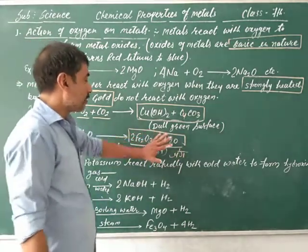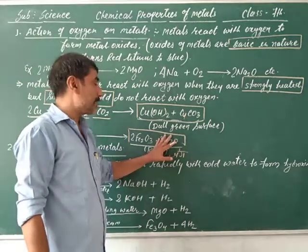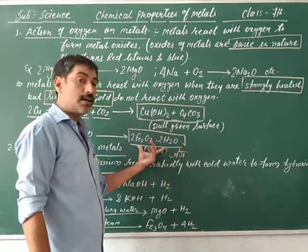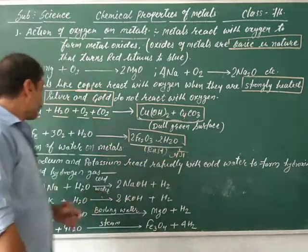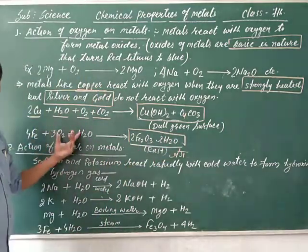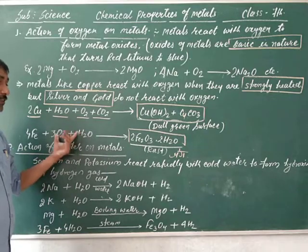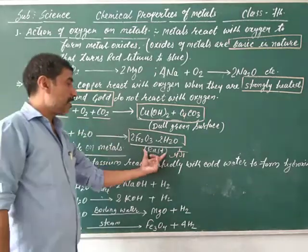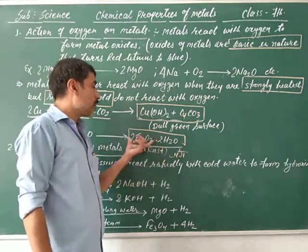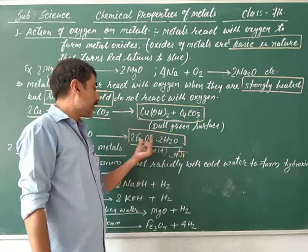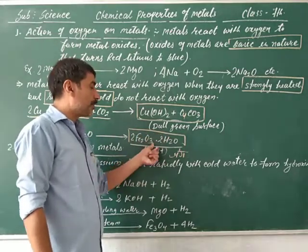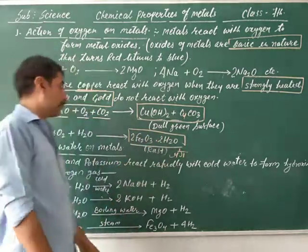Rust forms brown fluffy substances on iron. When iron is placed in moist conditions, it creates rust. The formula of rust is Fe2O3·H2O.